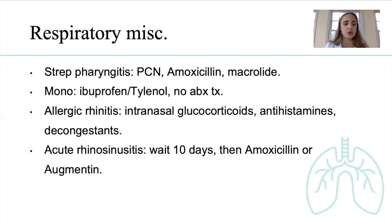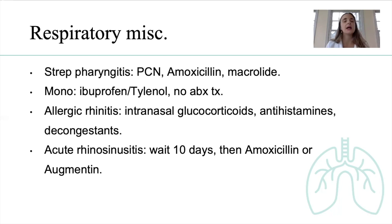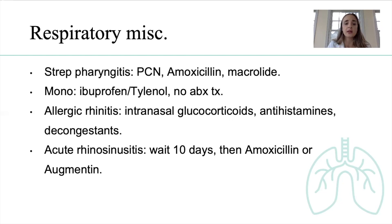Additional respiratory stuff: strep pharyngitis — remember ear, nose, and throat — think beta-lactam, penicillin, amoxicillin. If that doesn't work, go ahead and introduce a macrolide. Mono — remember mono is viral. How do we treat viral infections? We let them run their course. Do not give a mono patient an antibiotic. If by mistake you give them penicillin or amoxicillin, they may develop a huge lacy rash all over the body. Mono: let it run its course — ibuprofen, Tylenol for symptoms, no antibiotics.